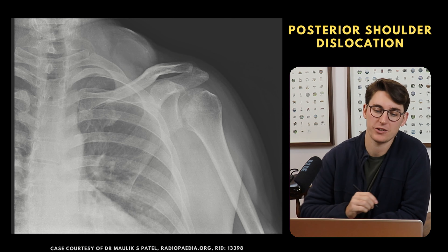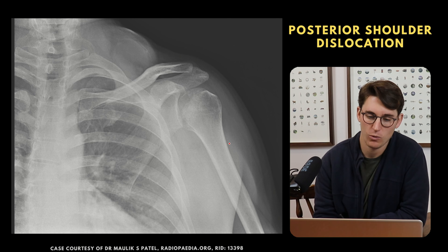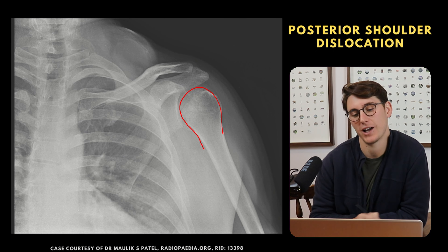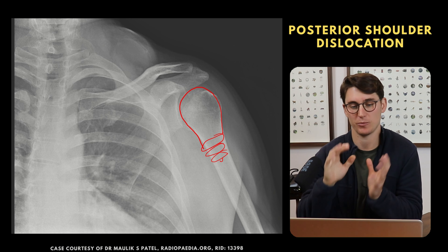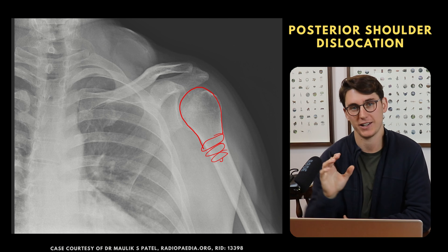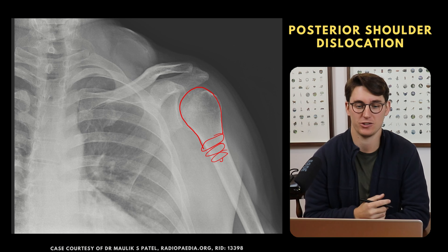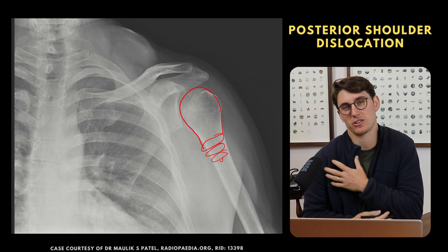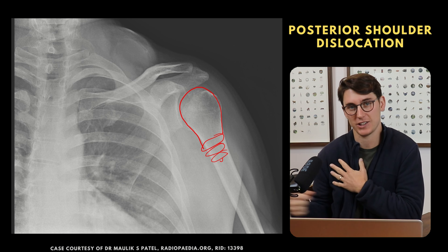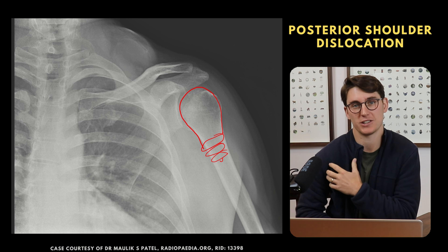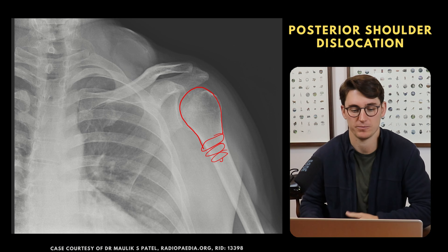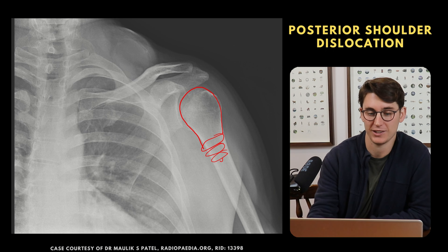Posterior dislocations can be quite tricky on the AP view. What we see is that the shape of the humeral head is more of what they call a light bulb — less walking stick and more light bulb. The humeral head has dislocated posteriorly with slight internal rotation. This appearance can also occur when a patient has a very sore shoulder and can't externally rotate for the AP view, even if the shoulder is still in the socket. So again, one view is one view too few.